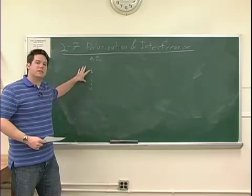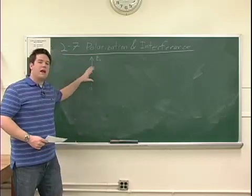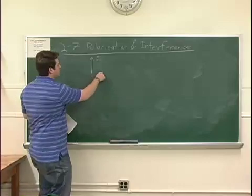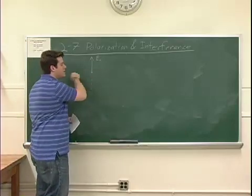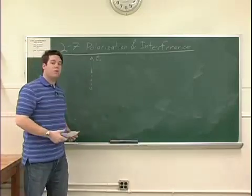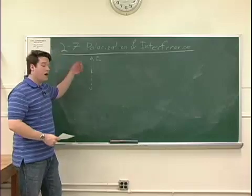Now linear polarizations can exist in almost any different angle. We can have light that's linearly polarized along this direction if it has no component of the electric field oscillating in the up and down direction.